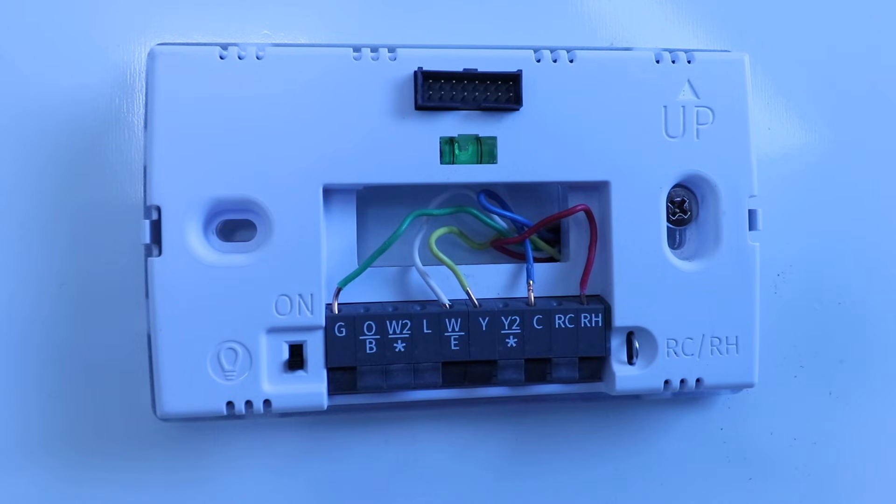But in cases where you have a smart thermostat that does require a C wire, typically, that is what it is used for. It allows the internal battery to charge within the smart thermostat, or the internal circuitry within the smart thermostat to be powered up continuously, even when your heating or cooling is not running. And that C wire allows that thermostat then to be powered up and show the display and connect to Wi-Fi systems.